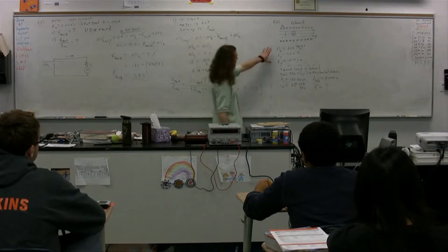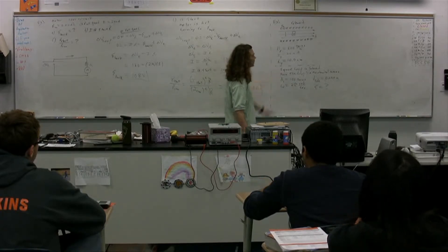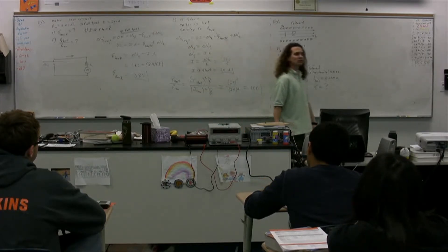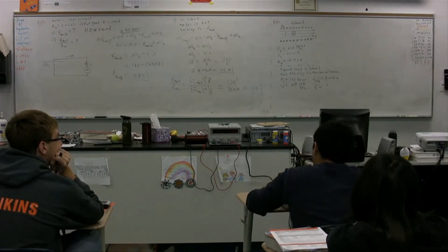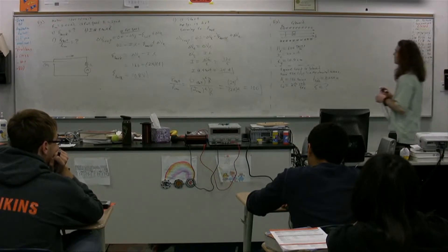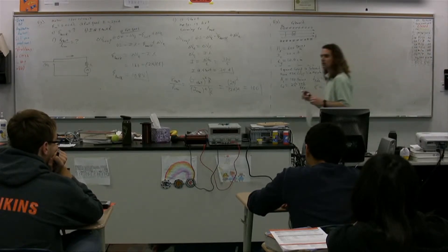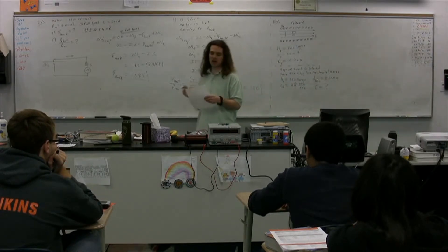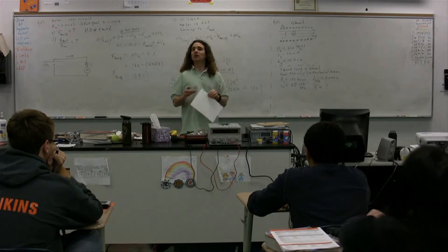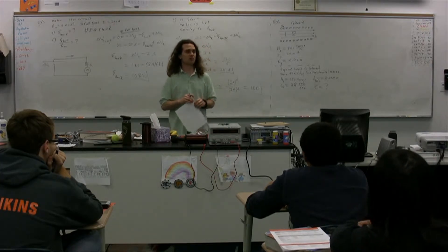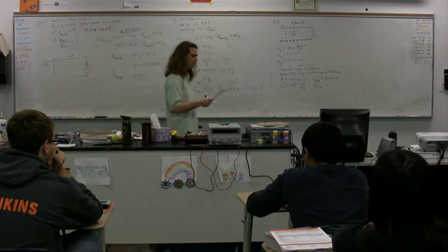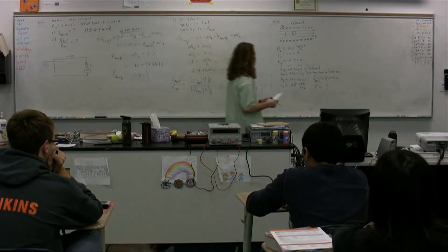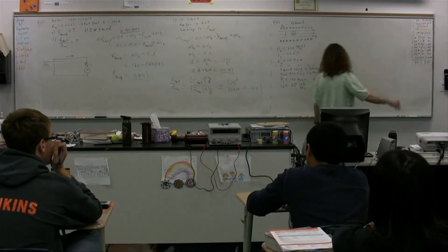So we have information about the solenoid and information about the loop. Basically, the solenoid creates the magnetic field, the loop is turning in that magnetic field, and it is the change in the flux in that square loop which is causing an EMF on that loop. Where would you like to start?